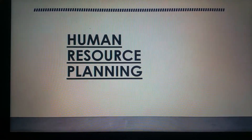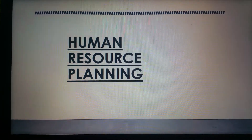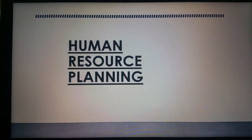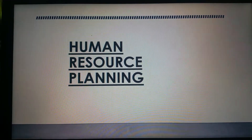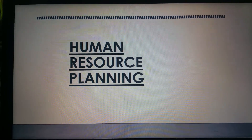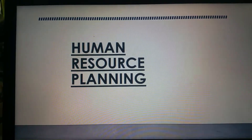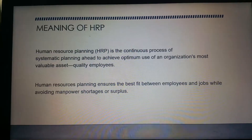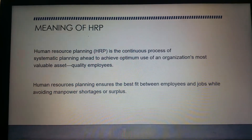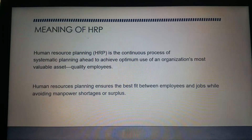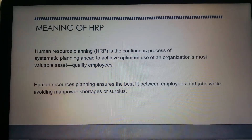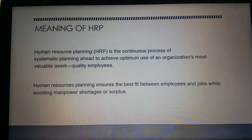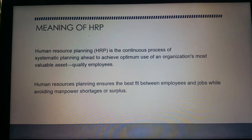Human resource planning is the first step in the human resource management process. It is the process by which an organization ensures that it has the right number and the right kind of people at the right place and at the right job in order to achieve the organizational goals. Human resource planning basically translates the organization's objectives and plans into the number of manpower needed in order to meet those objectives.